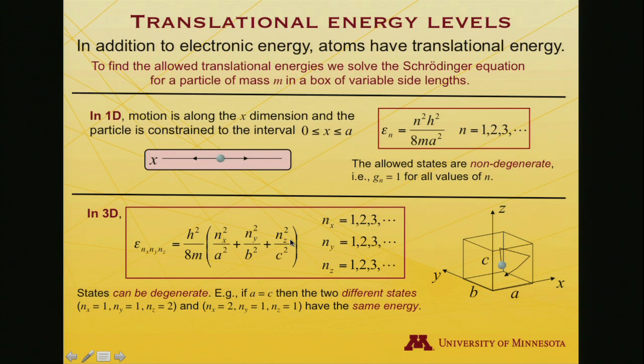But now, every dimension, x, y, and z, has its own quantum number associated with it. It still depends on the square. It still depends on the square of the lengths of the sides. But notice that states can be degenerate. That is, for instance, let's say that A and C just happen to be the same length. Well, in that case, quantum numbers indexing a state, I could talk about state 1, 1, 2, which is just the list of the x, y, and z quantum numbers.